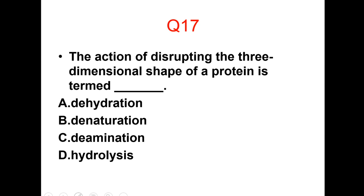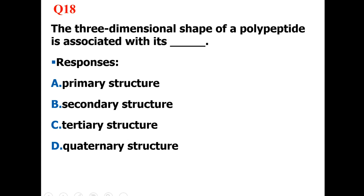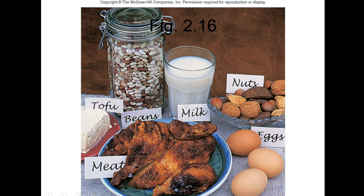Let's review question 17. The action of disrupting the three-dimensional shape of a protein is termed — choose the correct answer. Question 18: The three-dimensional shape of a polypeptide is associated with its — choose the best answer. This slide is showing some common examples of protein: tofu, beans, milk, nuts, eggs, and meat.